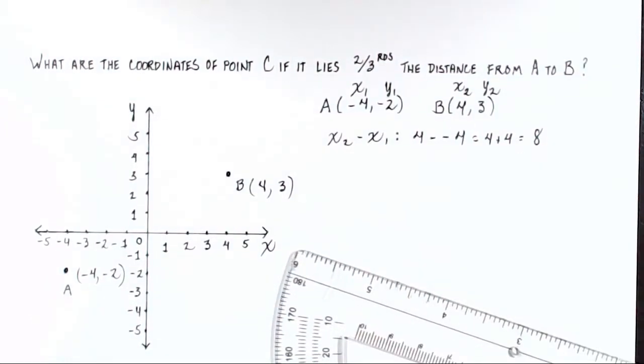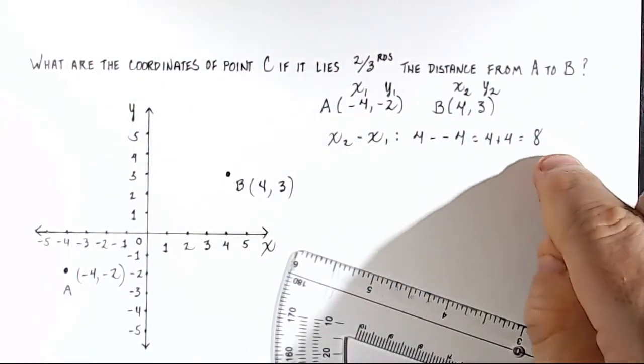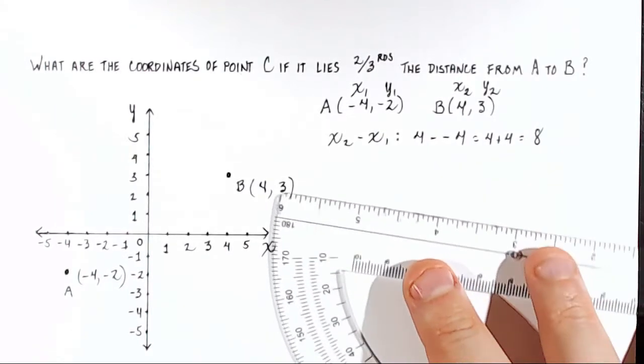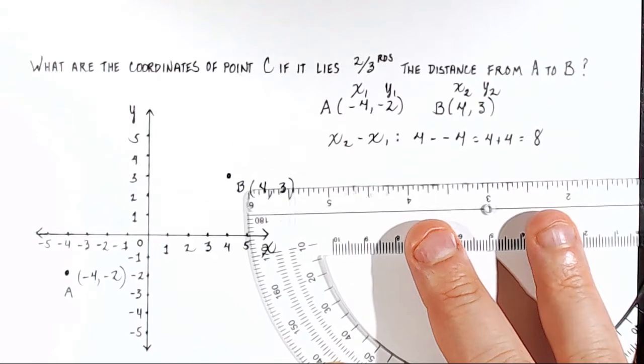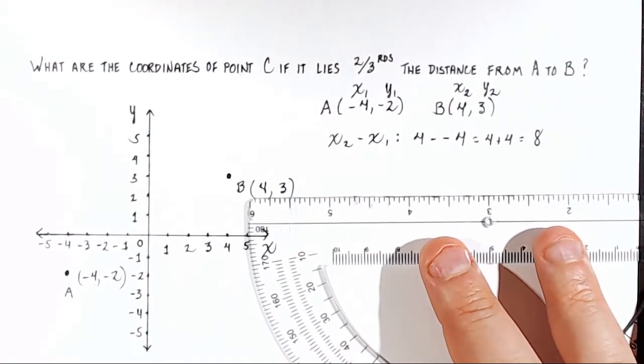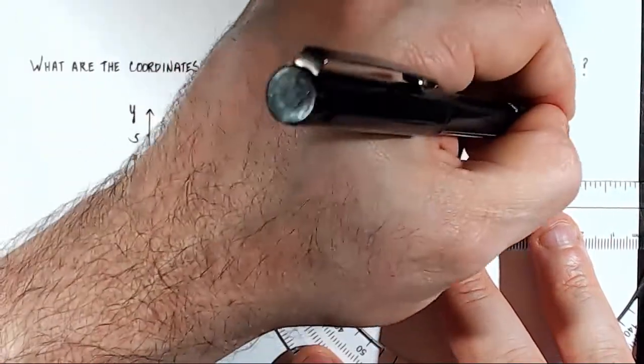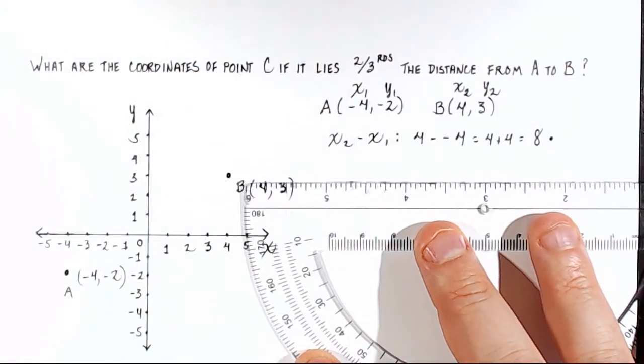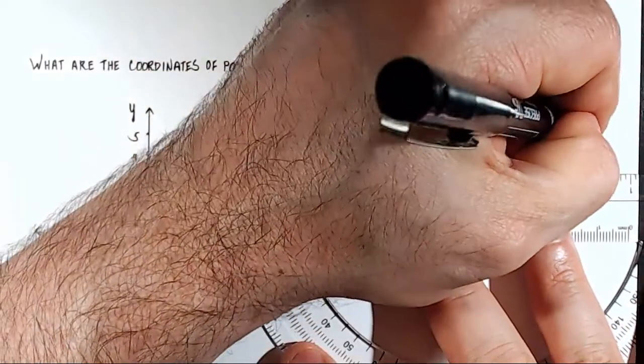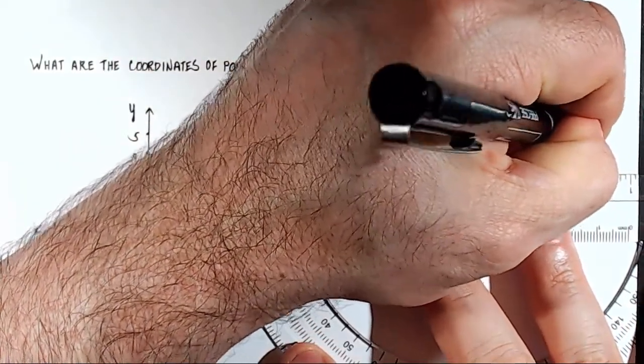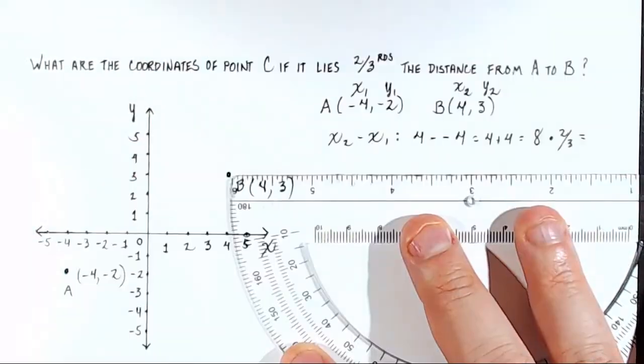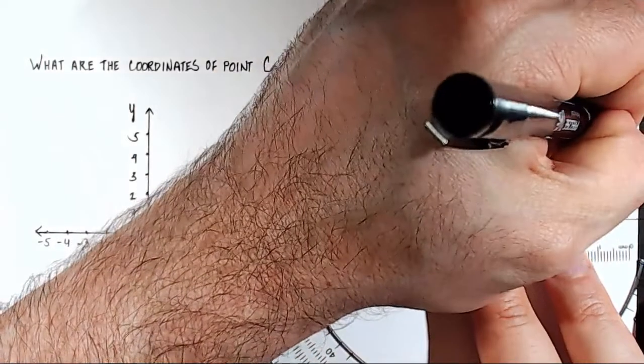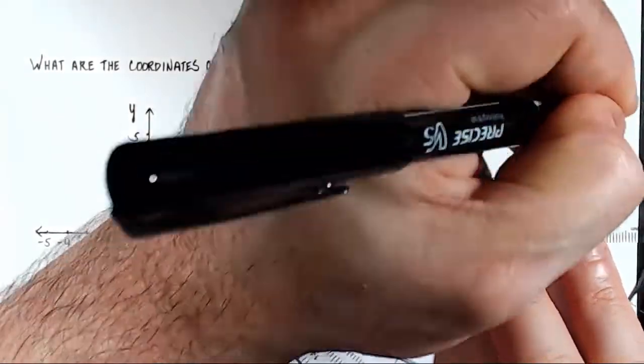So I need that absolute distance, because now I'm going to find the fractional component of this distance for the x value. What I do now is I take this 8 and I multiply it by whatever fraction they're looking for. So in this case, 2 thirds. And so what is 8 times 2 thirds? Well, 8 times 2 is 16 over 3. So 16 thirds.